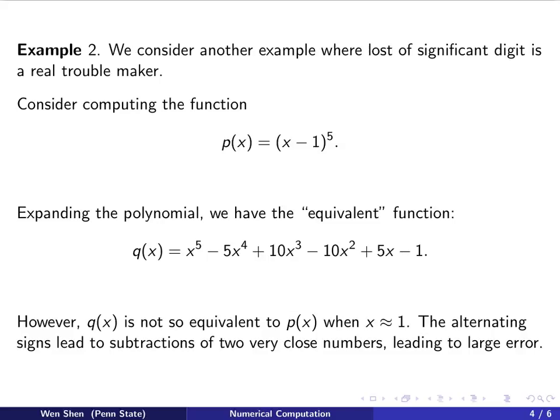But unfortunately, if you want to compute this in a computer with finite decimal places computation, this expression is actually not so equivalent to the original one when x is close to 1. Because in this computation for q, you have alternating signs. Let's say x is positive, then all these minuses mean you'll be performing subtractions. When x is very close to 1, you will end up subtracting something rather close in values, and the error caused by the loss of significant digits will be rather large.